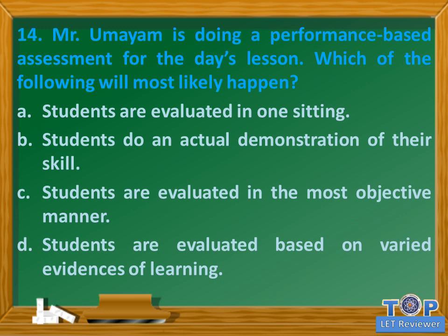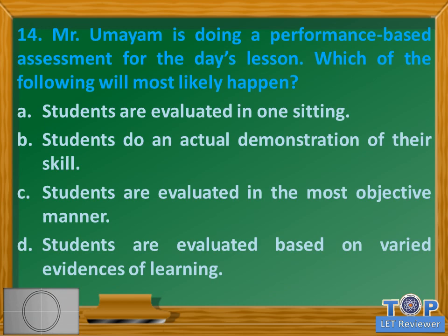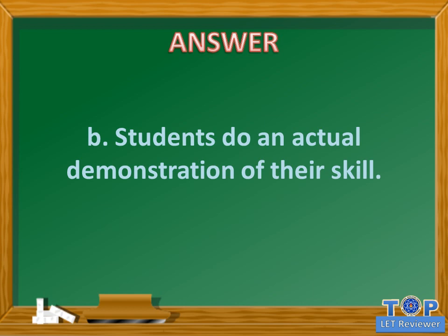Question number fourteen: Mr. Umayam is doing a performance-based assessment for the day's lesson. Which of the following will most likely happen? A. Students are evaluated in one sitting, B. Students do an actual demonstration of their skill, C. Students are evaluated in the most objective manner, D. Students are evaluated based on varied evidences of learning. Answer: B. Students do an actual demonstration of their skill.